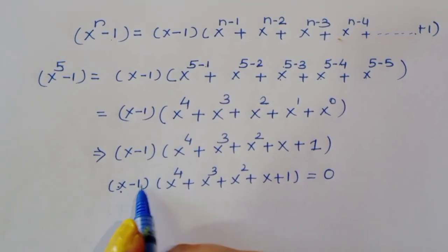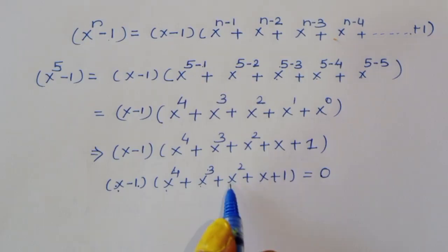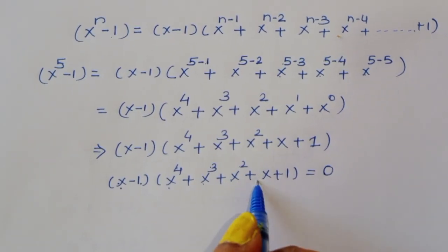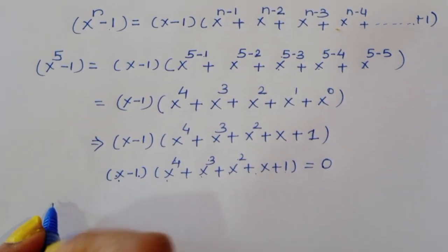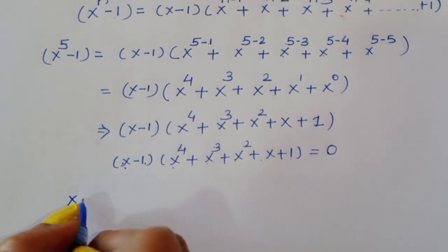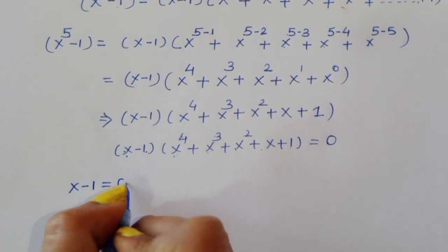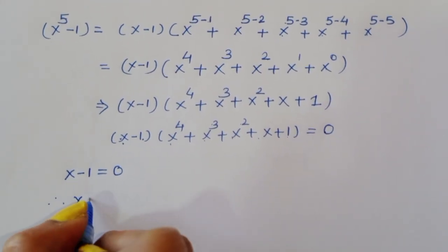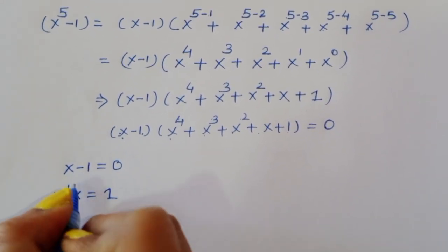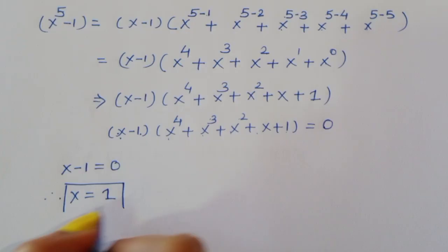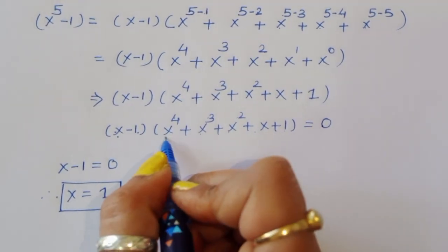Now we have two equations: first, x minus 1 is equal to 0, and second, x^4 plus x^3 plus x^2 plus x plus 1 is equal to 0. From the first equation, x minus 1 equals 0, therefore x is equal to 1. This is the first value of x.